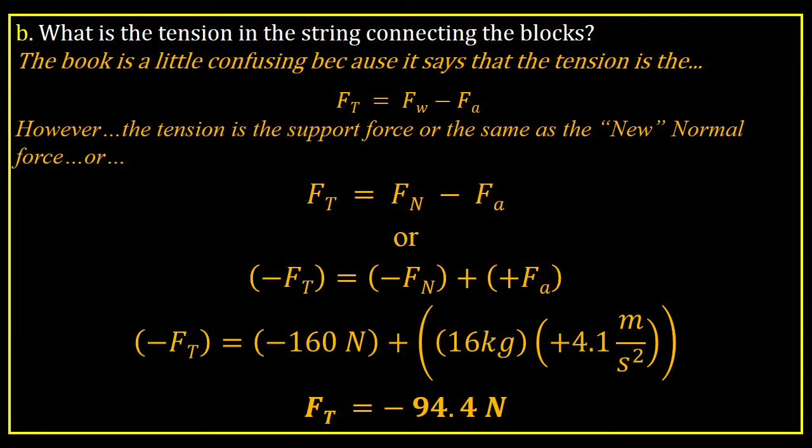The book is a little confusing because it says that the tension is what we just said. However, the tension is the support force, or the same as the new normal force. So FT equals FN minus FA, or negative FT equals negative FN plus positive FA. And doing it this way, it would be negative 160, and then it's going to be 16 times 4.1 mass times acceleration, so that the tension would be 94.4, or negative 94.4, because it's going in the other direction.